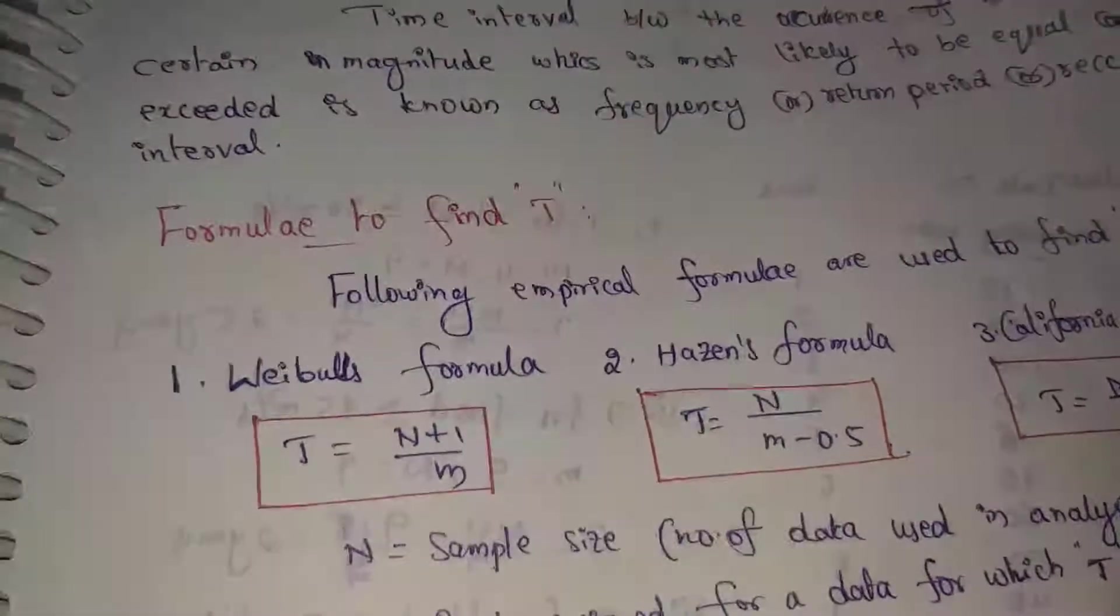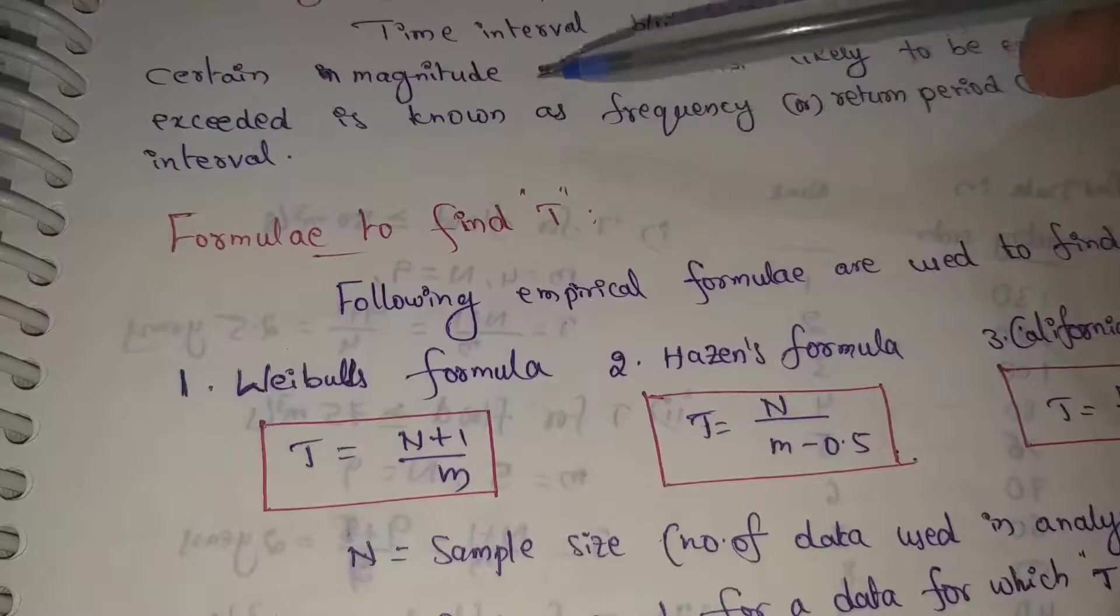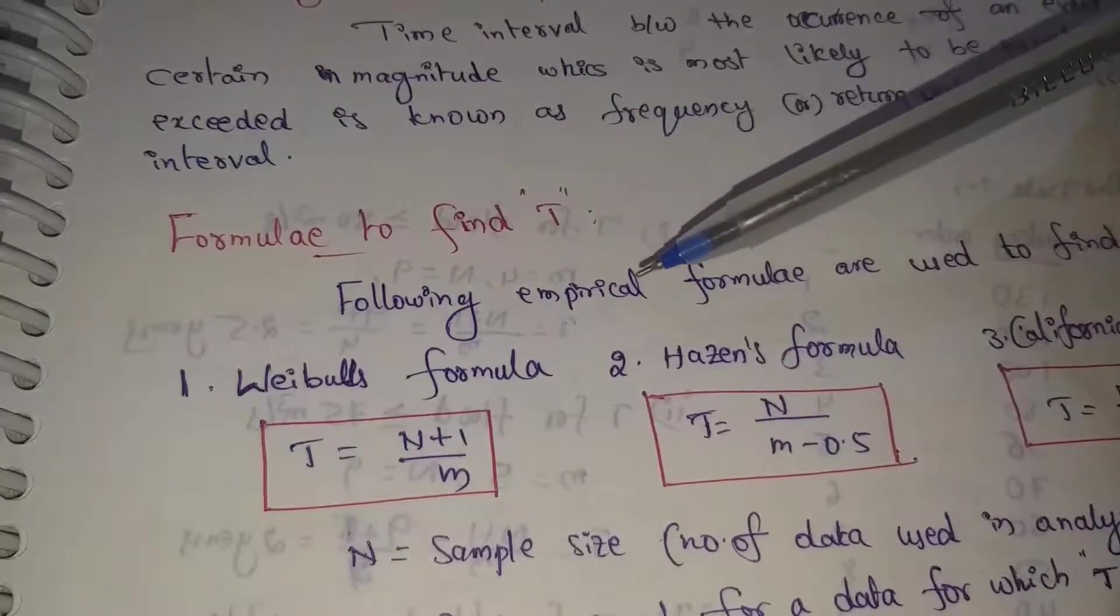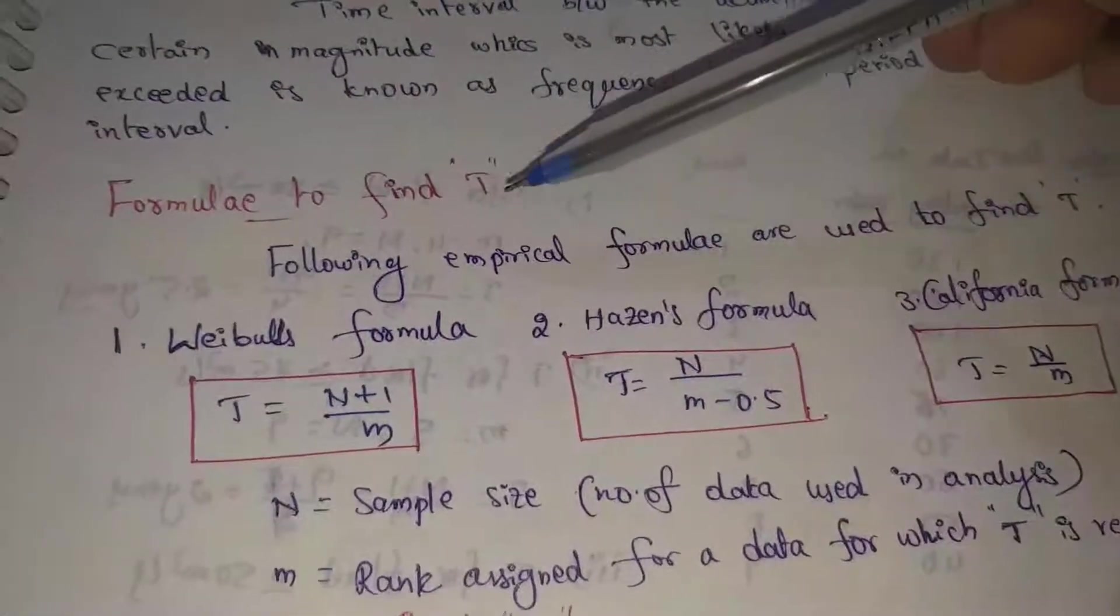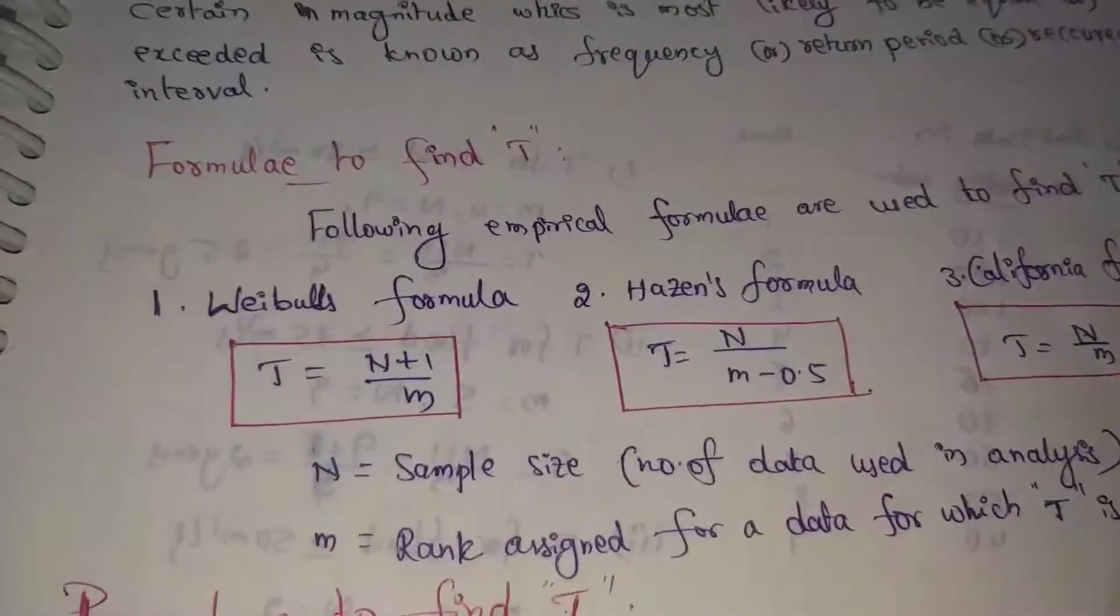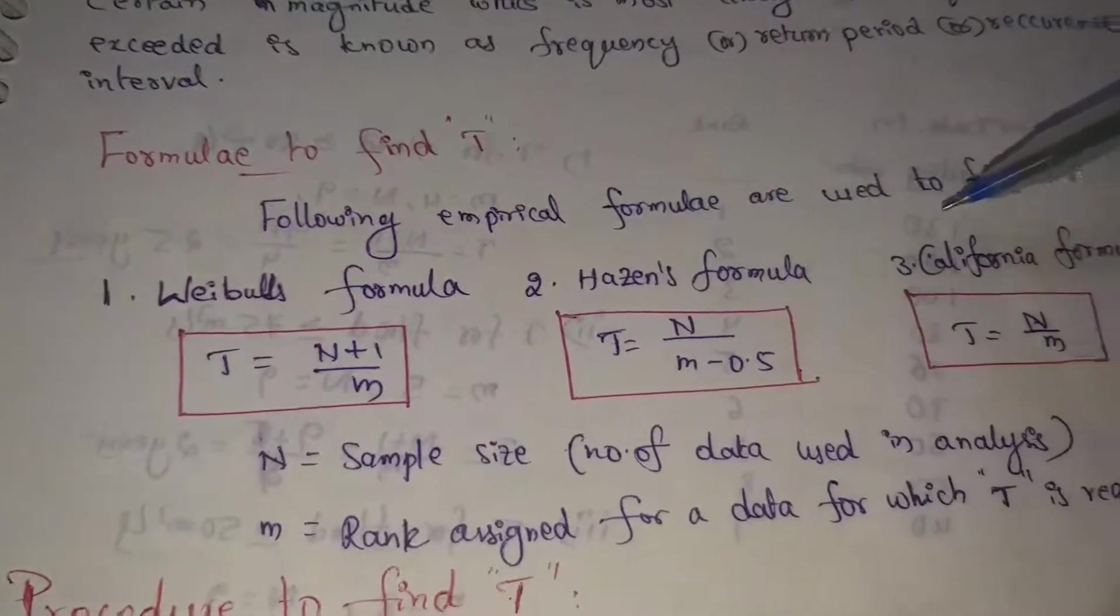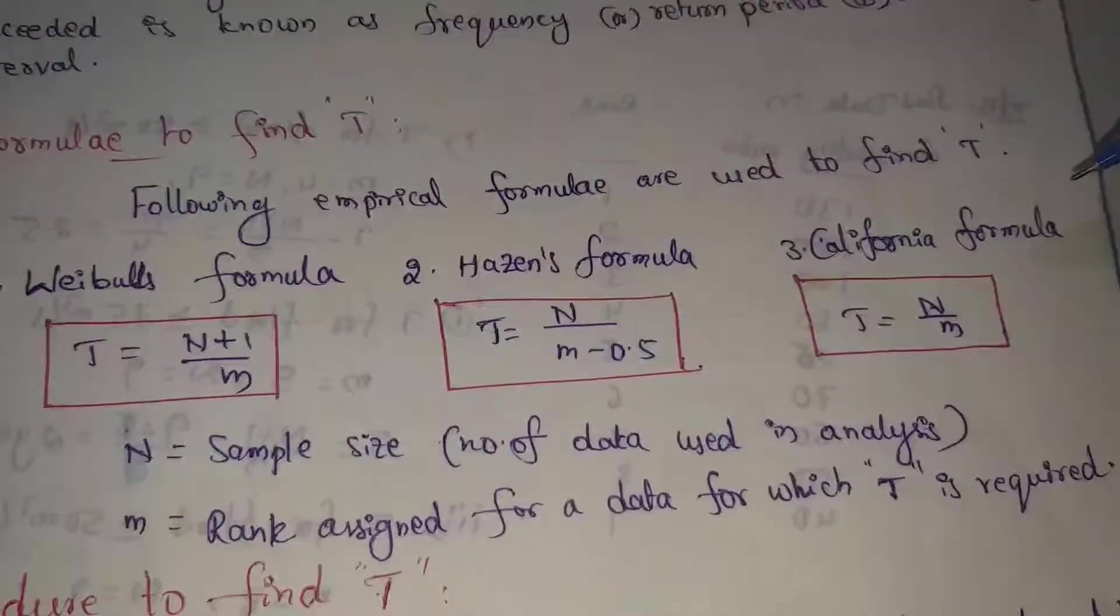We have formulas to find T. Following empirical formulas are used to find T. We have Weibull's formula, Hazen's formula, and California formula.